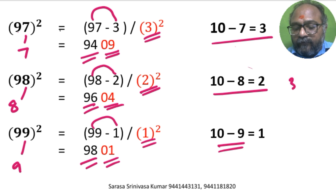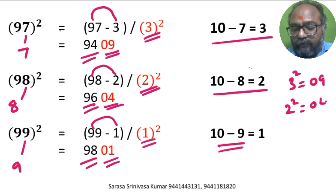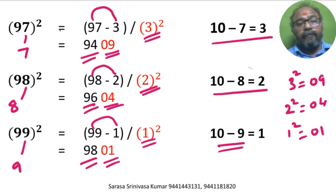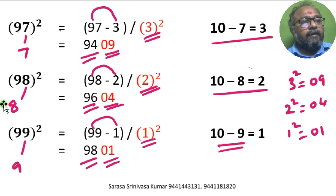Note: 3 square is written as 09, 2 square is written as 04, and 1 square is written as 01. This is how we find the squares of the given numbers.